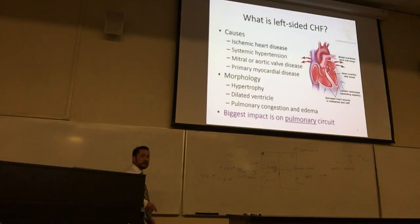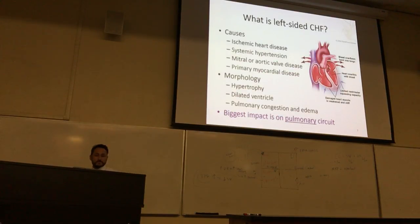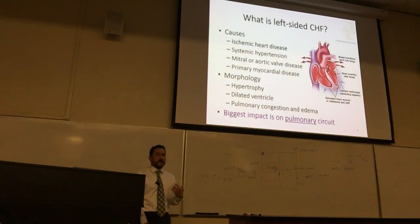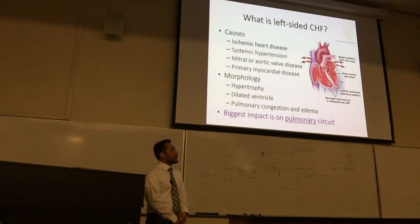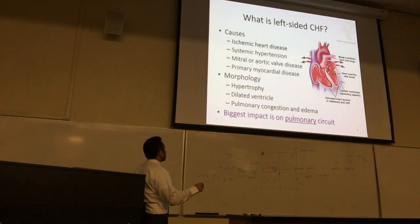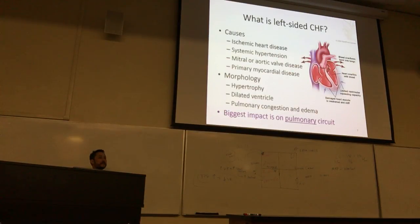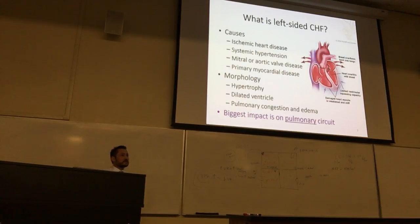A patient could also have a genetic predisposition or myocardial disease — myocarditis or endocarditis — diseases wired in the genome where the heart is in a weakened state. Morphologically, you get hypertrophy and enlargement of the heart itself. You also get a dilated ventricle — it blows out, usually on the left side.